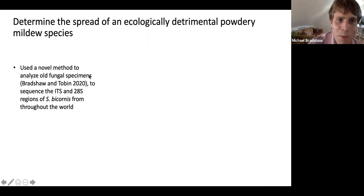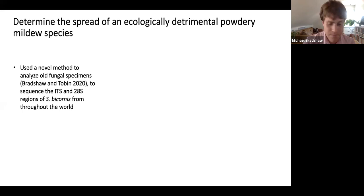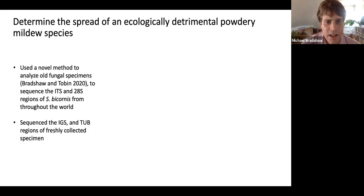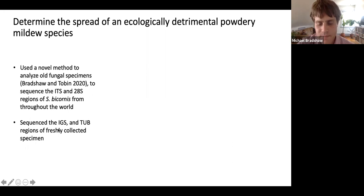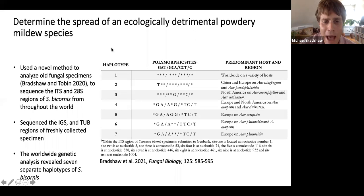I wanted to use my novel method to analyze old fungal specimens — to sequence the ITS and 28S region of Sawadaea bicornis from throughout the world. I also sequenced the IGS and TUB regions from freshly collected specimens. The ITS and 28S are easier to amplify because there are multiple copies throughout the genome, whereas the beta-tubulin region has only one or two copies. From all the sequencing I accomplished, I identified seven different haplotypes or strains of powdery mildew from throughout the world for Sawadaea bicornis.